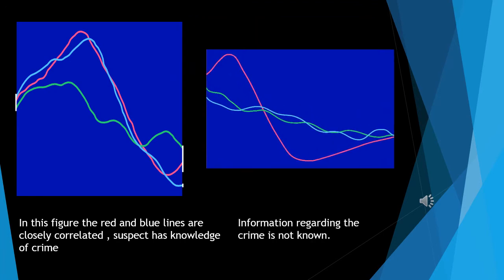In the first figure, the red and blue lines are closely correlated. It means the suspect has knowledge of the crime.